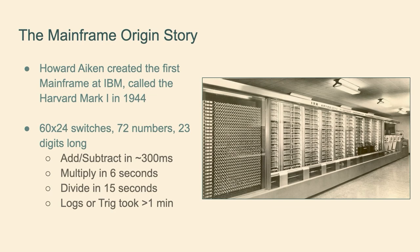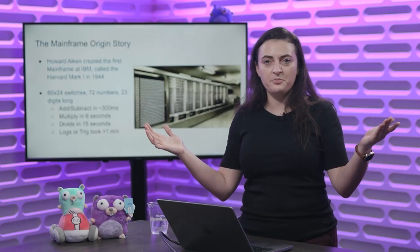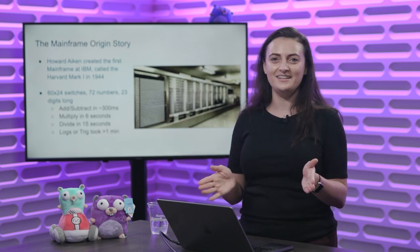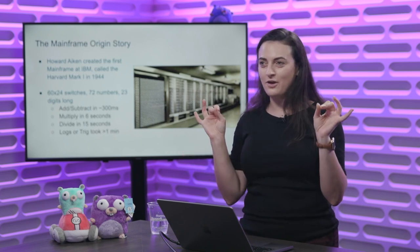What this mainframe was for: as you can see at the very first section, it has a 30-by-24 set of switches — and there are actually two of them, so you've got 60. Those are all used for tracking values inside your mainframe. You can do up to 72 numbers, they can be 23 digits long, and you can do a bunch of math. The metrics for how fast you can do these math equations were absolutely mind-blowing at the time. Howard, who created this, was saying: this is it, we've solved this problem. There are going to be maybe 24 entire mainframes used in the entire world. He said, we're going to do all of our math problems and solve the world's problems.